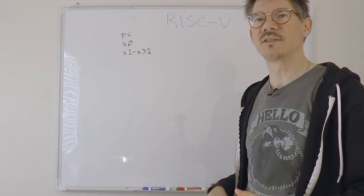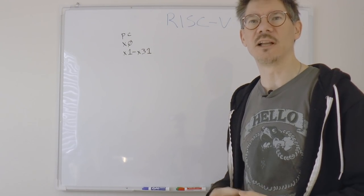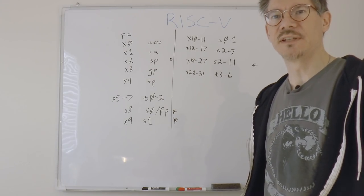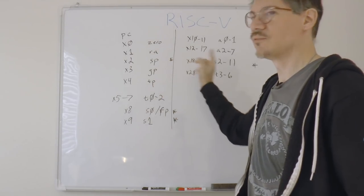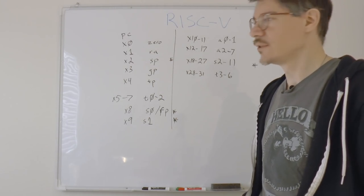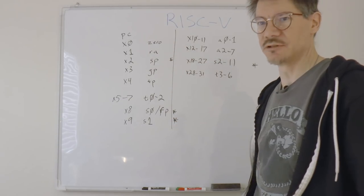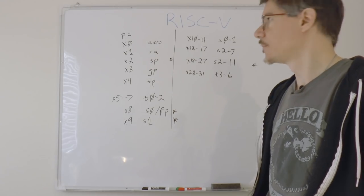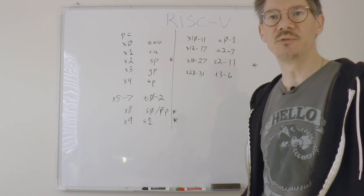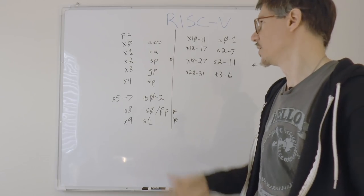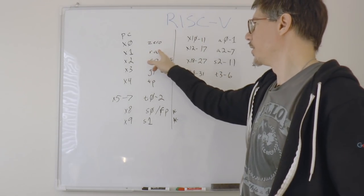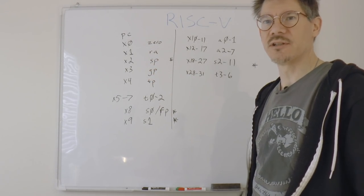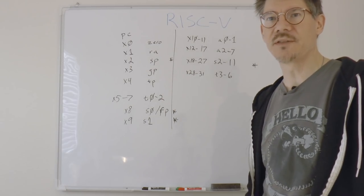Well, the creators of RISC-V recognized that and simply decided to formalize that. Now, the ABI, or Application Binary Interface for RISC-V, specifies that certain registers are for certain uses, and each register has a particular name in the ABI. So for example, X0, which we know is always set to 0, is simply called 0. X1 is used for return addresses. X2 is the stack pointer, X3 is a global pointer, and X4 is a thread pointer.